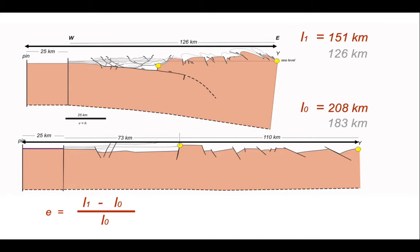So L1 now becomes 151 kilometres from a previous value of 126. L0 has also gone up 25 kilometres from 183 to 208 kilometres. Plug those values into the expression below.